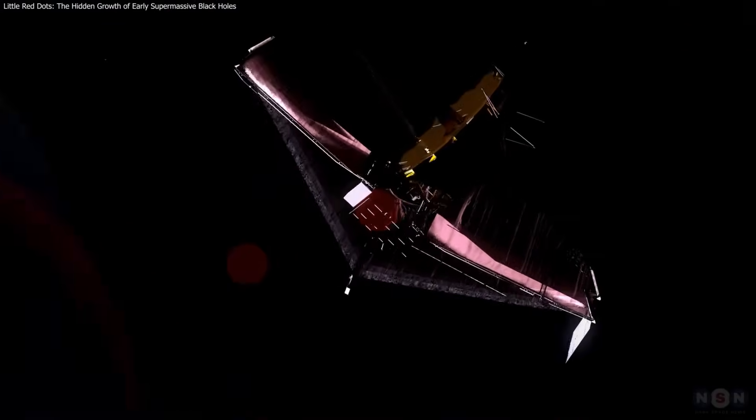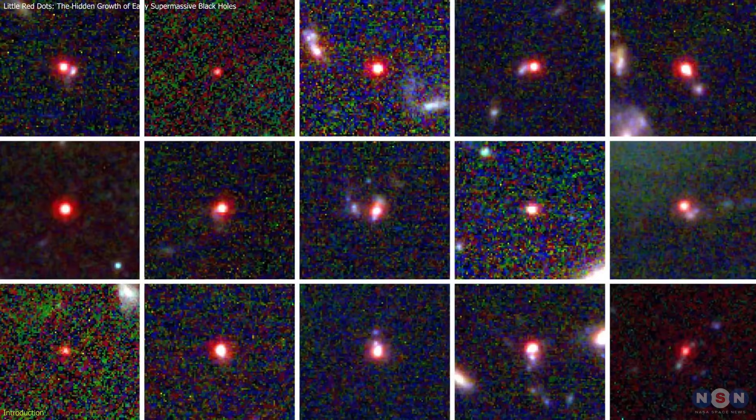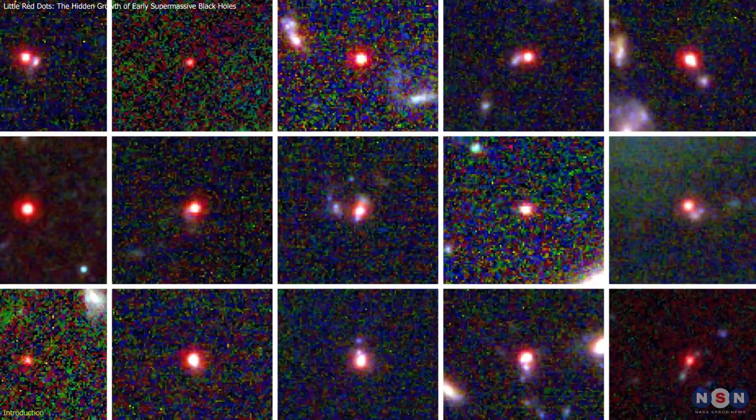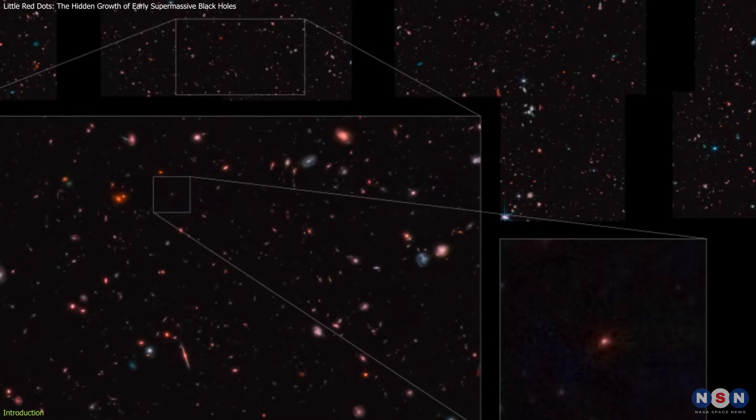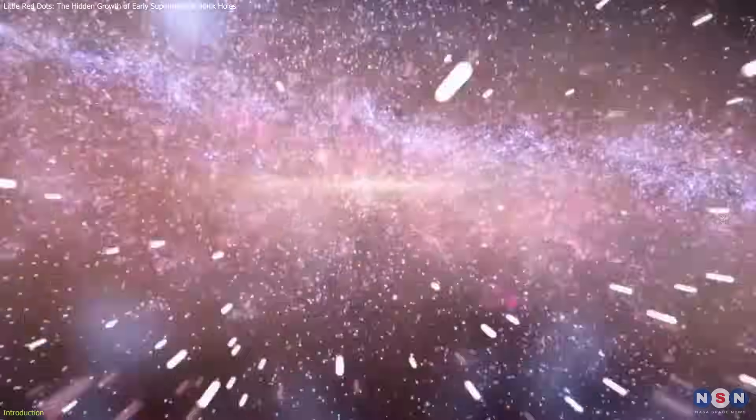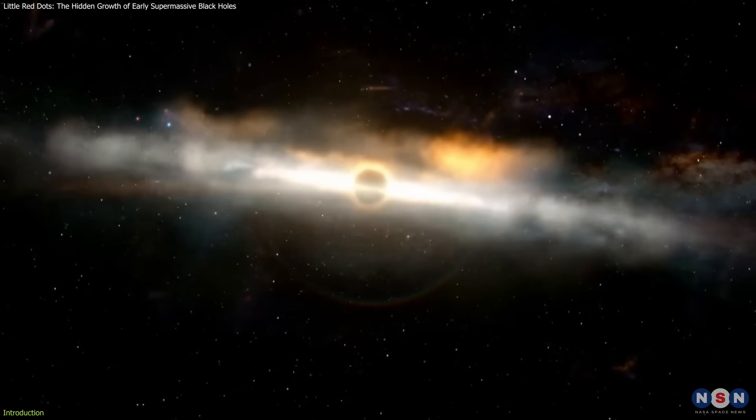The James Webb Space Telescope has once again reshaped our understanding of the cosmos. This time, astronomers have uncovered mysterious little red dots in deep sky surveys, objects that could hold the key to how supermassive black holes formed in the early universe.